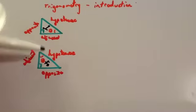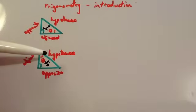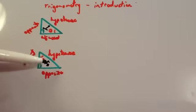The main thing is the hypotenuse is the longer side, it's the one opposite the right angle. The opposite is the side opposite the angle that you're considering and the adjacent is the one left.